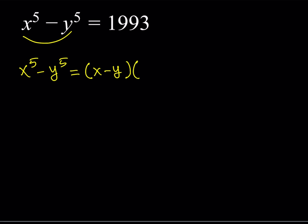Here's how you form all the terms in the second factor. You're going to start with the highest power of x, which is x to the fourth. Then every term, the power of x goes down one by one and the power of y goes up by one. In the first term of the second factor, there's no y — it's y to the power zero. Since the original sign is a minus sign, the first factor is x minus y, and in the second factor everything is going to be a plus sign.